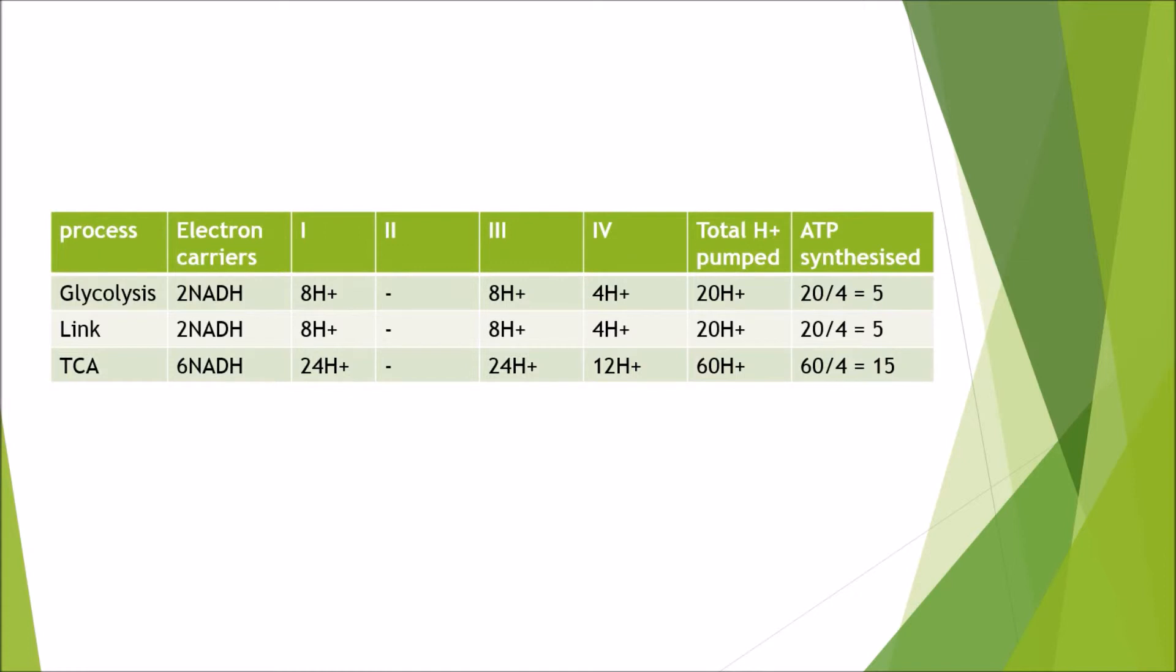Then from the tricarboxylic acid Krebs or citric acid cycle, we know we get six NADH molecules produced from it. From complex 1, that gives us 24 hydrogen ions. From complex 3, it gives us another 24 hydrogen ions. From complex 4, it gives us 12 hydrogen ions, which gives us a total of 60 hydrogen ions pumped from the TCA cycle. And those 60 hydrogen ions will give us 15 ATP molecules. But if you also remember correctly, we also get FADH2 from the tricarboxylic acid cycle. So what happens to them?